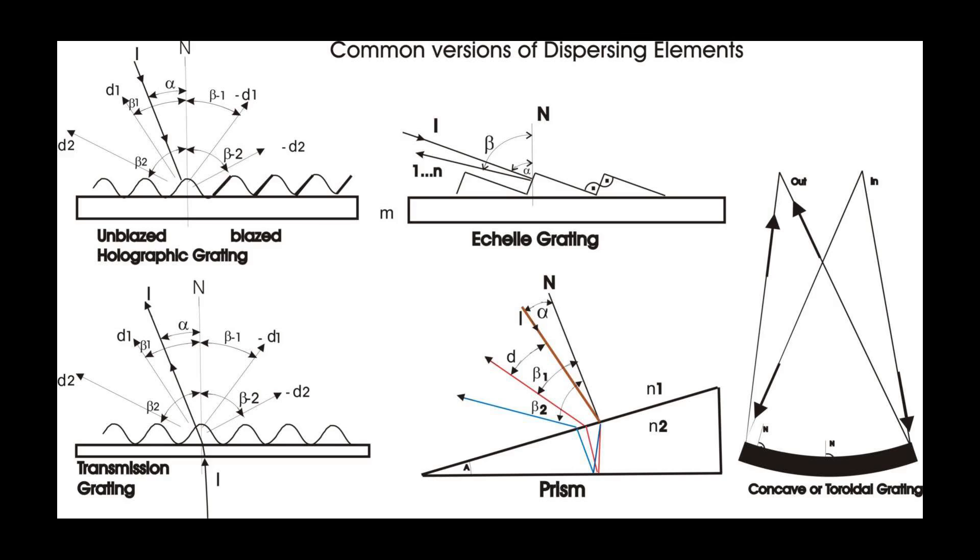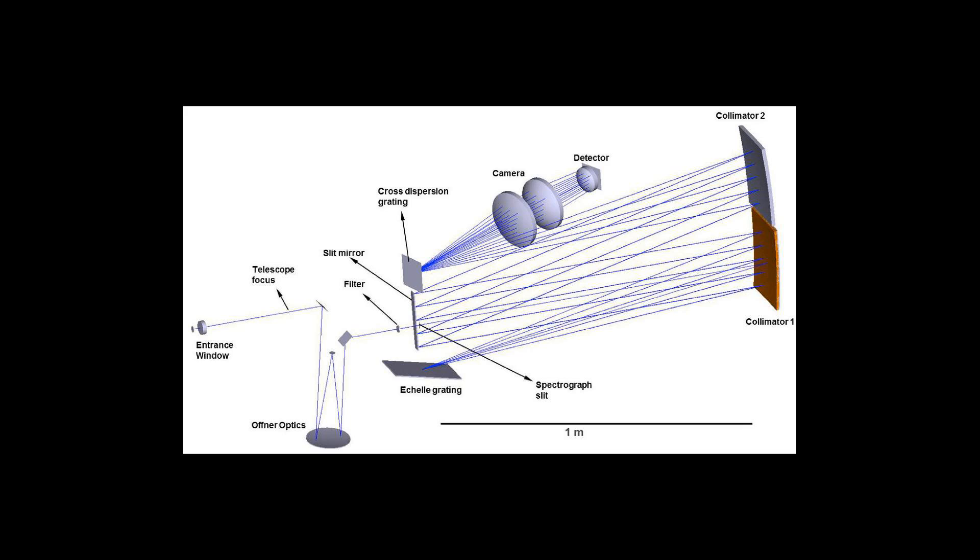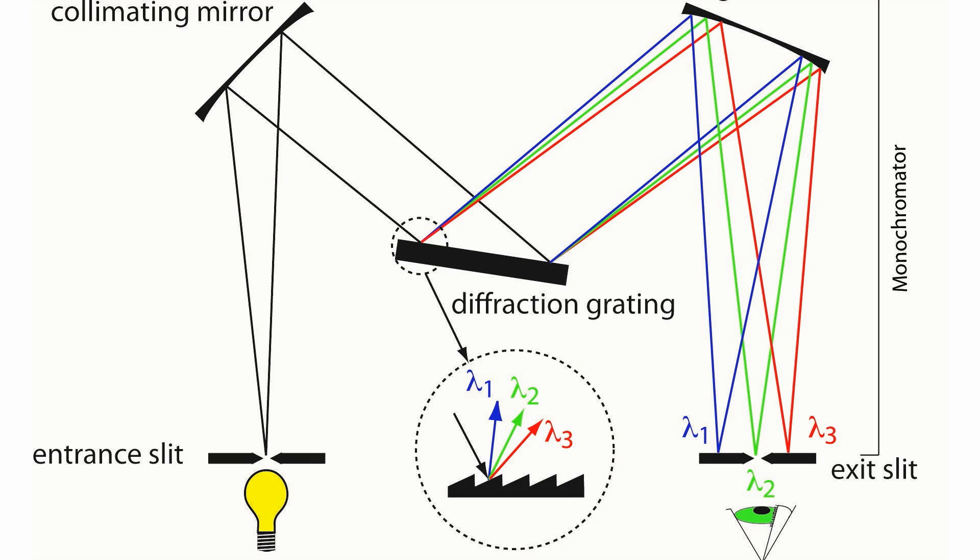is a type of diffraction grating characterized by a relatively low groove density, but a groove shape which is optimized for use at high incidence angles and therefore in high diffraction orders.